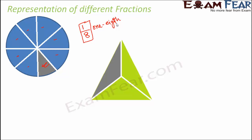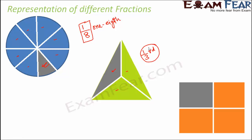Let us look at this triangle. This triangle has been divided into 3 equal parts, and one part out of three is shaded, so one third of the triangle is shaded. Now this is a rectangle divided into four equal parts and one part out of four is shaded, so one fourth of the rectangle is shaded. This is how, looking at pictures, you should be able to identify what fraction is shaded or not shaded.